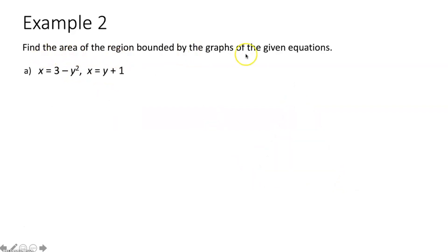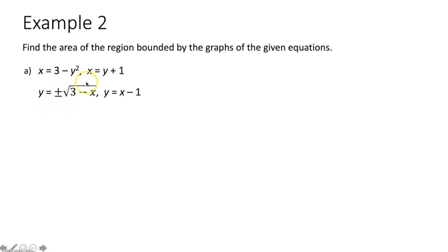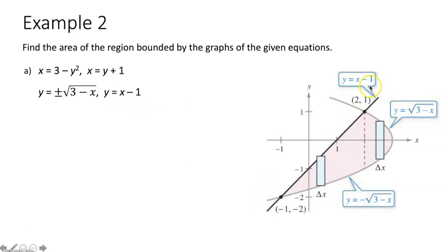Example two: find the area of the region bounded by the graphs of x = 3 - y² and x = y + 1. This is a little different. If we solve each for y, we get y = ±√(3 - x) and y = x - 1. Looking at the graph, these intersect at x = -1 and x = 2. However, if we just integrate from -1 to 2, we'd only capture part of the region — there's additional area to the right that's still part of the bounded region.